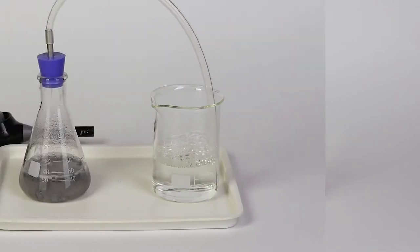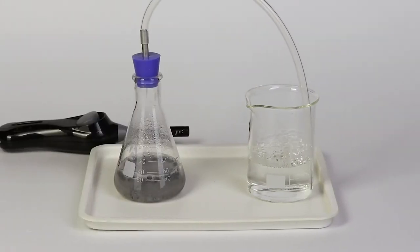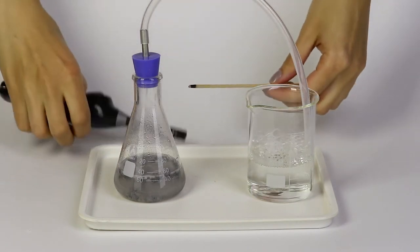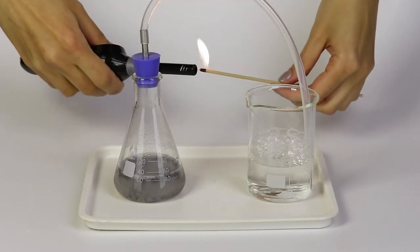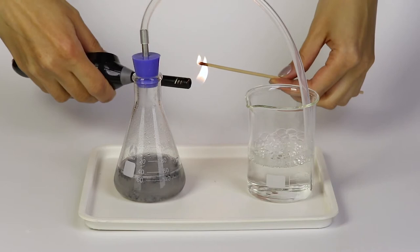When sodium hydrogen sulfate dissolves, hydrogen ions are released. The zinc powder reacts with these ions to yield zinc ions and hydrogen gas. The hydrogen gas travels through the silicone tubing into the soapy solution, where it forms the foam.